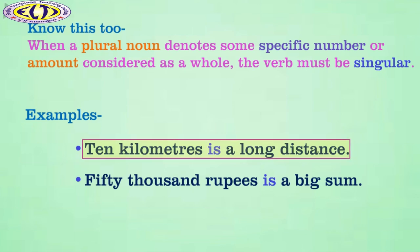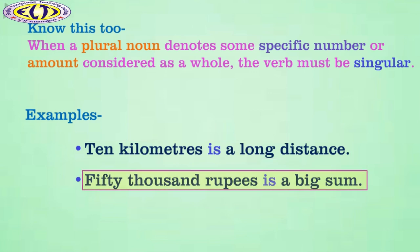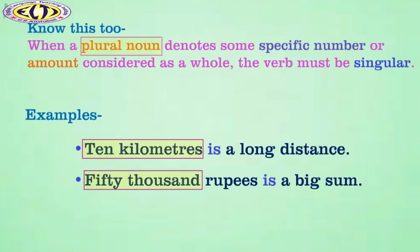For example, 10 km is a long distance. 50,000 rupees is a big sum.